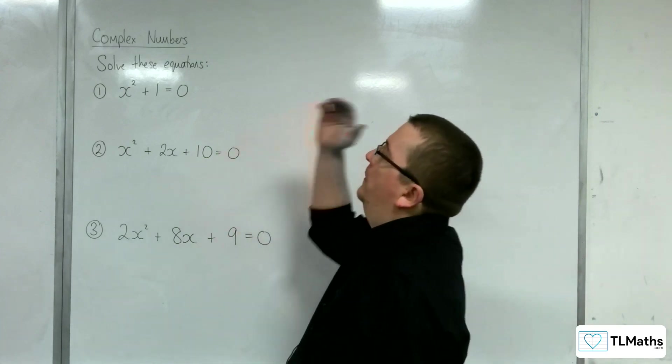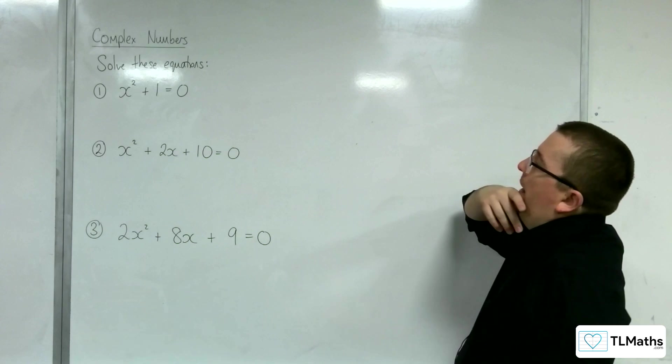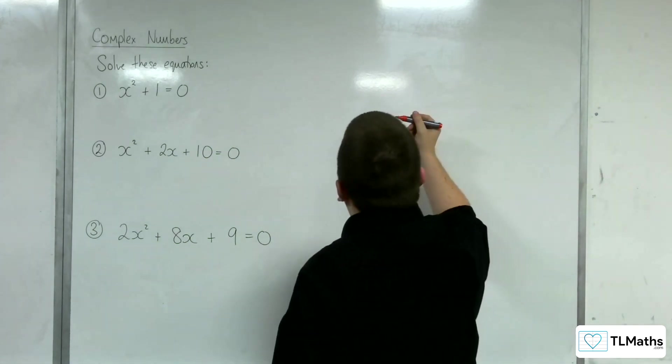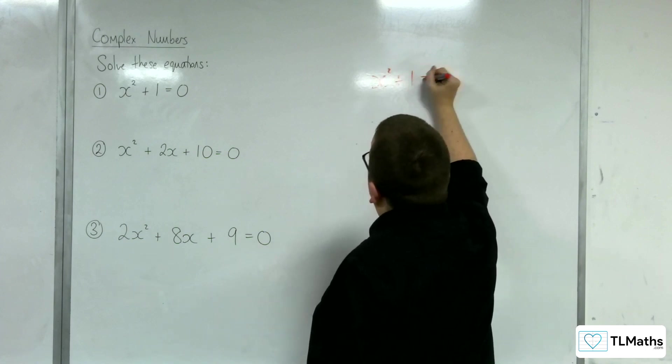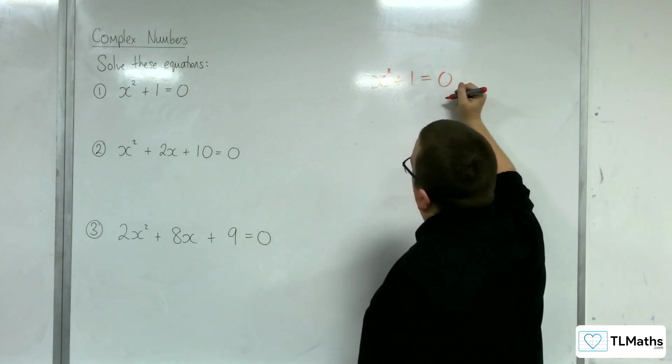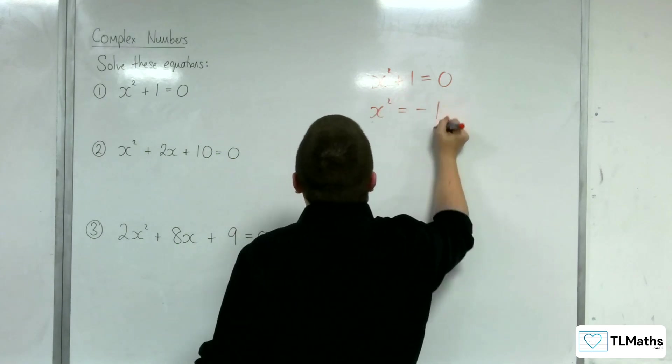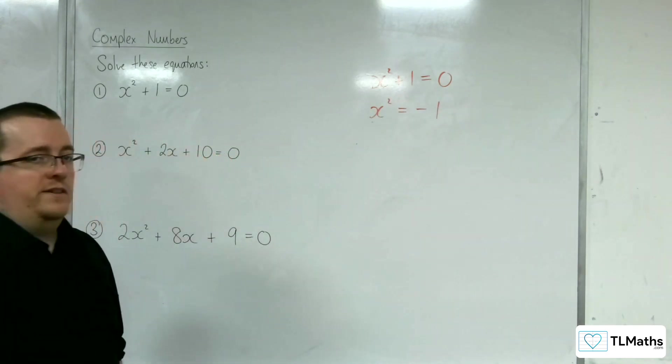First thing is first, we've got this x squared plus 1 is equal to 0. So, in solving that equation, I would take 1 from both sides. So, x squared is equal to negative 1.